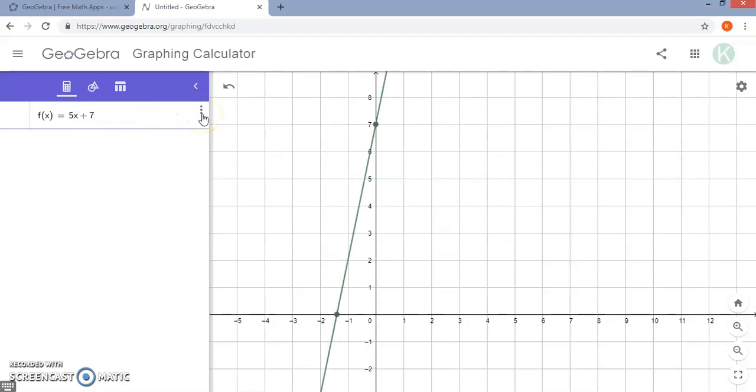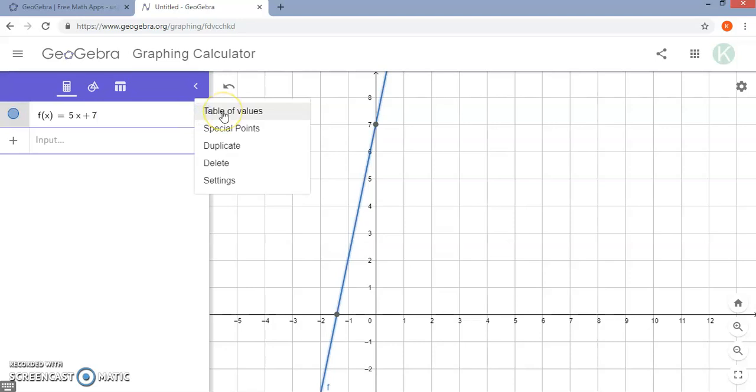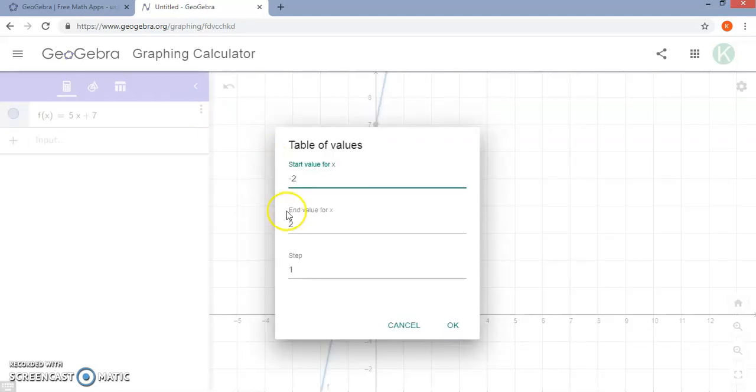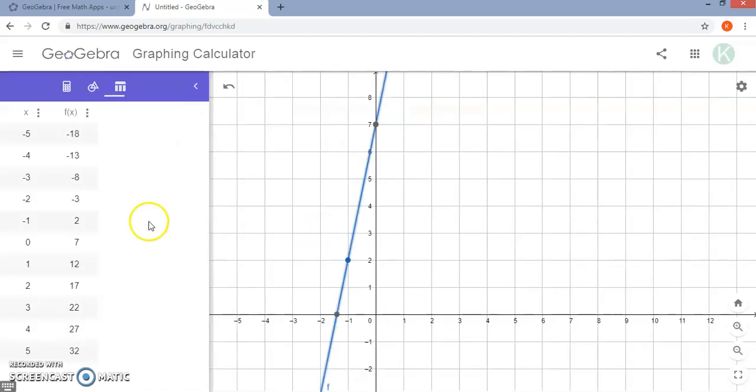I'm going to come over here to the three dots, and I'm going to select table of values. It will ask me where I want to start and end and what my step size is. So I'm going to make this a little bit wider range, negative 5 to 5. And notice it puts all of this over under the table tab.